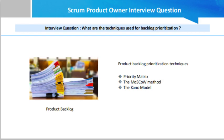The next one is the MoSCoW method, also called MoSCoW prioritization or MoSCoW analysis. It is another popular technique for classifying requirements. Product managers organize the backlog items into four priority categories: Must-have — essential features without which the solution does not exist; Should-have — crucial features but not time-sensitive; Could-have — nice-to-have features that would increase user satisfaction; and Won't-have — features that wouldn't bring any real value.